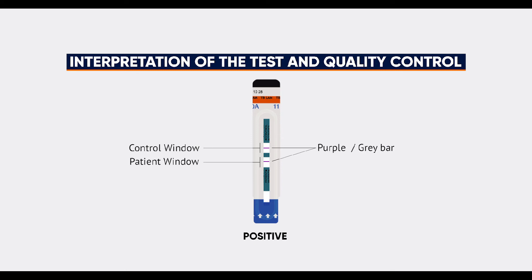The appearance of two purple or grey bars in both the control window, labelled control, and the patient window, labelled patient, of the strip indicates the TB-LAM result is positive.